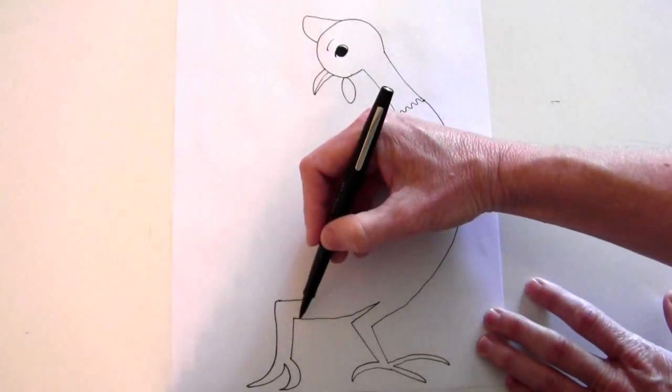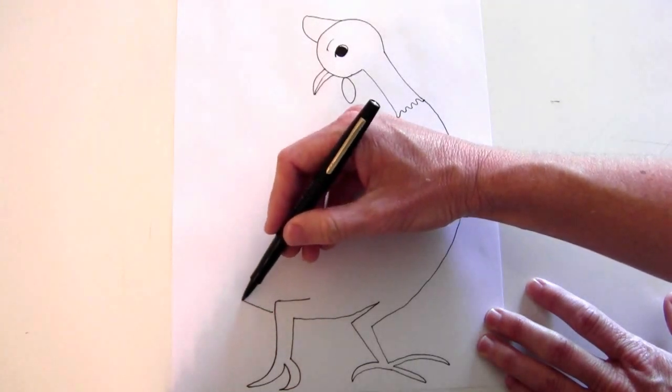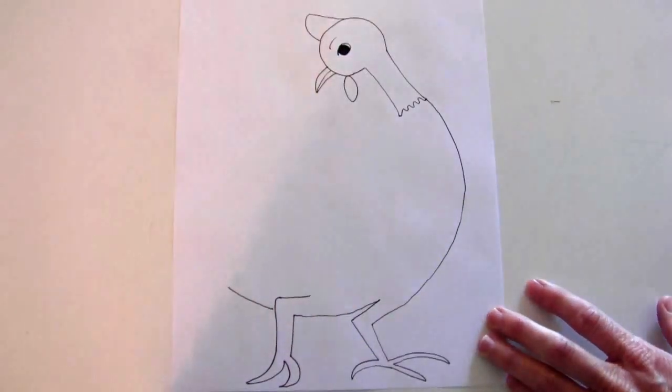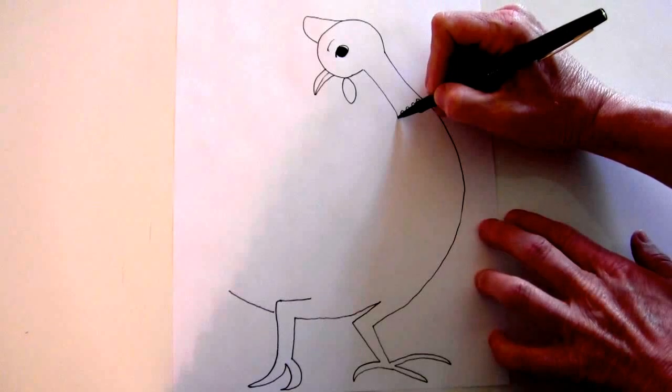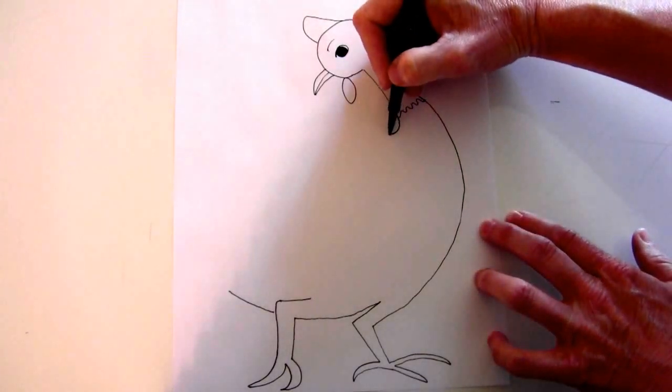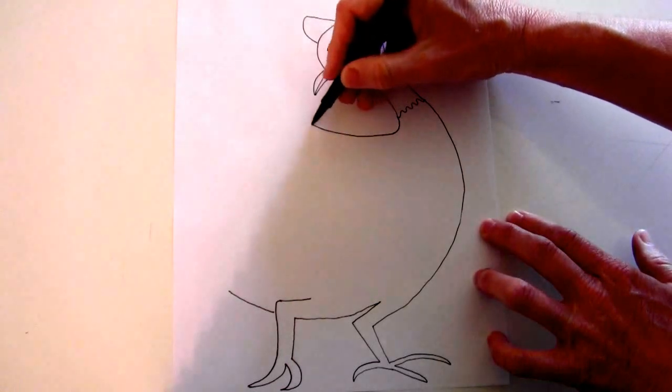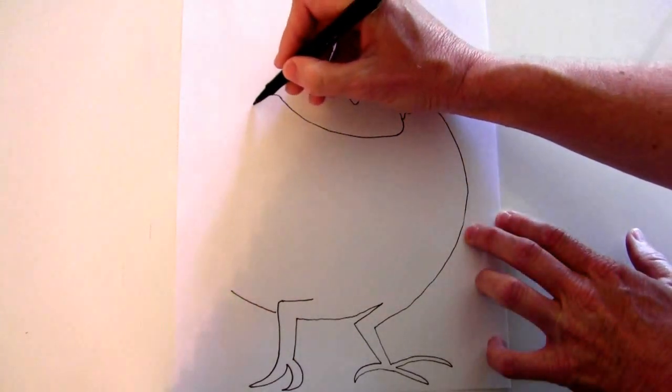Now from this line here, you want to imagine it coming out about the same place over here, and draw a line just like that. From the neck here, go down just a little, and then start curving up, and curve out.